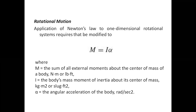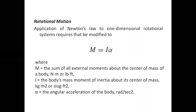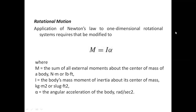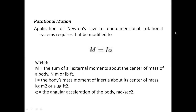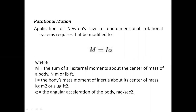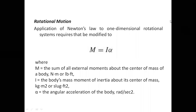In the last lecture we studied translational motion in the dynamic modeling of mechanical systems. We saw that for translational motion, Newton's law — force equals mass times acceleration — is used, and we derived the mathematical model and transfer function for speed control of a car. Now, another possibility of motion in mechanical systems is rotational motion, and today we are going to see one example of rotational motion.